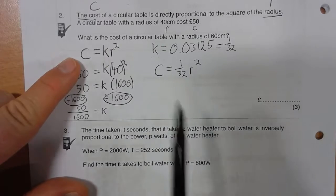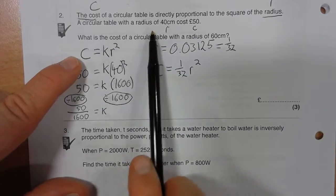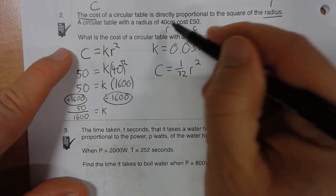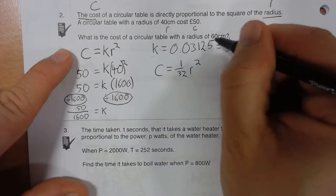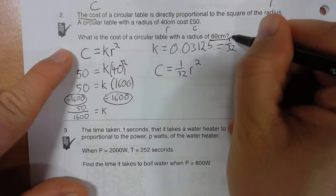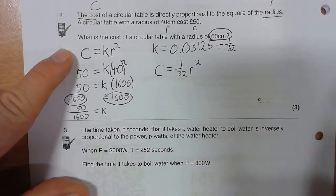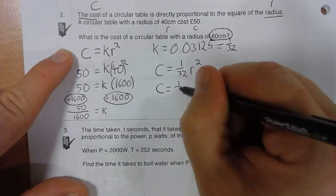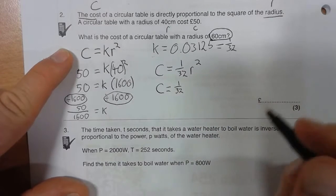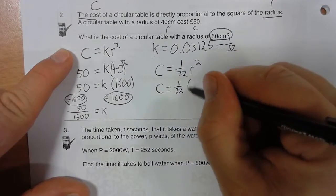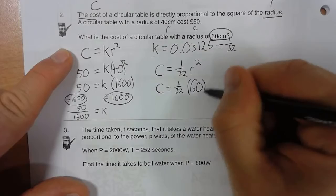Okay, now I'm going to substitute in the values. Now I've got my new radius here, new radius that I'm going to substitute in. So cost equals 1/32nd of 60 squared.